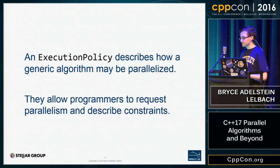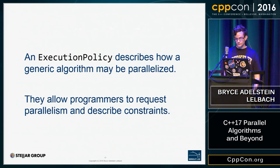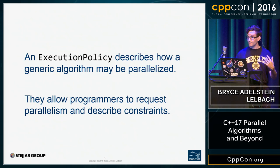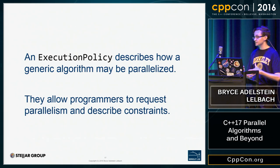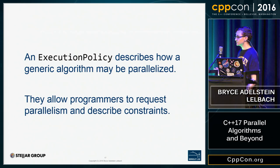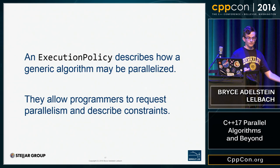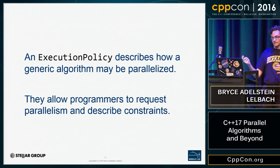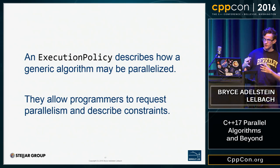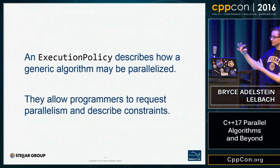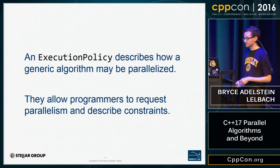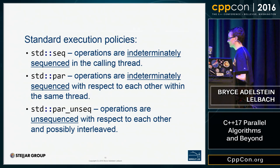An execution policy describes how a generic algorithm may be parallelized. They allow programmers to request parallelism and describe constraints on parallelism — not specifying 'use my GPU,' but rather saying 'these sorts of operations are okay.' There are three standard execution policies. std::seq is mainly for debugging — it specifies that operations will be indeterminately sequenced in the calling thread only, with no new threads created, so it's essentially serial. std::par says to parallelize but not vectorize. std::par_unseq says operations are unsequenced with respect to each other and possibly interleaved.